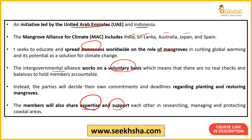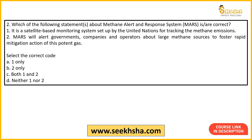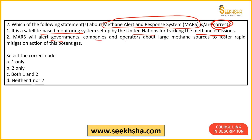A simple question but environment-specific questions are important for the paper. The second question is related to the Methane Alert Response System (MARS). Statements are given and you have to identify which is correct. The first statement is that it is a satellite-based monitoring system which the United Nations has set up to track methane emissions. The other point is that MARS is the Methane Alert and Response System which will alert governments and operators about large methane emissions.